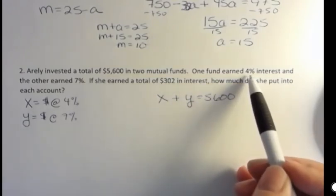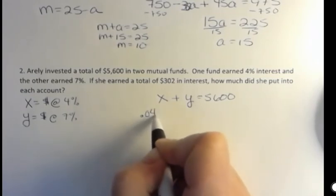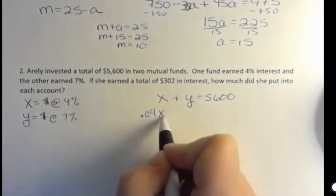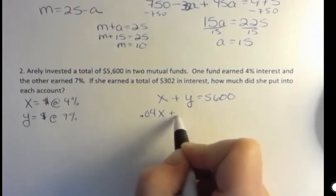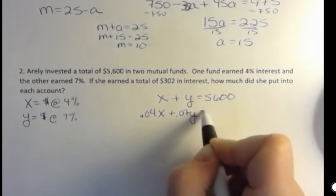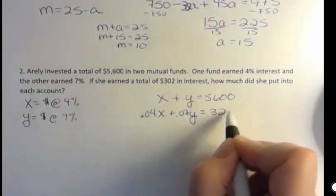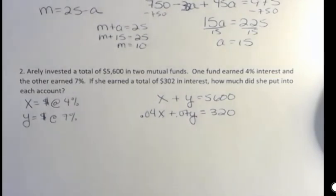Remember when we talk about 4%, we're talking about 0.04. So we have 0.04 interest earned for all the X dollars. And we have 0.07 interest earned for all the Y dollars. And we were told that the total interest earned was $320. So there's our two equations.